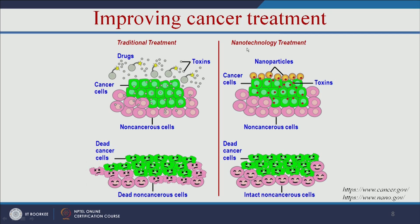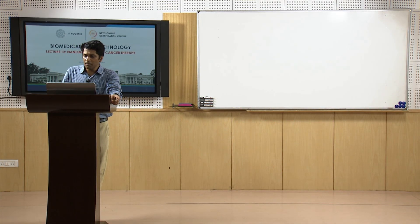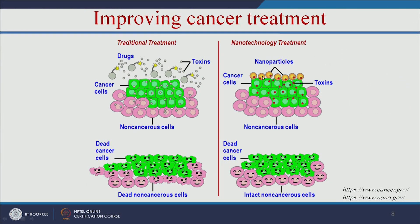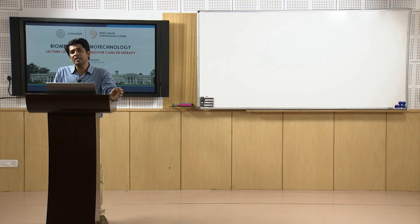In traditional treatment, the drug acts like a bomb — it blasts both cancer cells and healthy cells, causing both to die. That is the major drawback of traditional cancer therapy. But with nanotechnology, nanoparticles specifically go and bind only to the cancer cells, killing only the cancer cells while the healthy cells remain unaffected. It is highly specific and targeted, protecting the healthy cells and killing only the cancer cells.